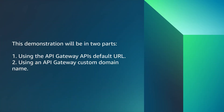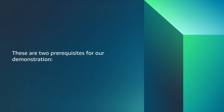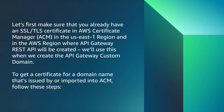This demonstration will be in two parts: using the API Gateway API's default URL, and using an API Gateway custom domain name. These are two prerequisites for our demonstration. First, make sure that you already have an SSL/TLS certificate in AWS Certificate Manager in the US East 1 region and in the AWS region where the API Gateway REST API will be created.